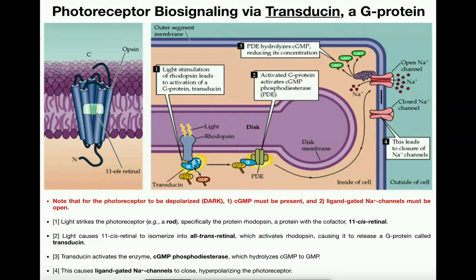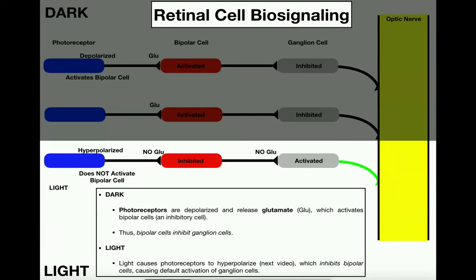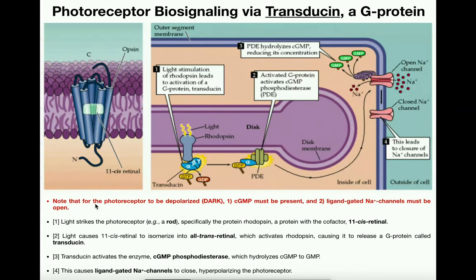These G proteins in the dark are very tightly associated with rhodopsin. In the dark, in order for the photoreceptor to be depolarized — which is what's happening in the dark — you have to have two things: the second messenger cyclic GMP (cGMP) must be present, and these ligand-gated sodium channels must be open. If those two things are satisfied, that's what you have in the dark.